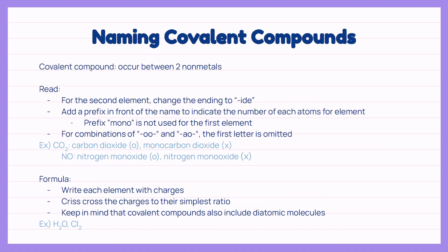Now naming the covalent compounds. Covalent compounds occur between two nonmetals. To read this, we change the ending of the second element to IDE. We also add a prefix in front of the name to indicate the number of each atom for the element. However, the prefix mono is not used for the first element.